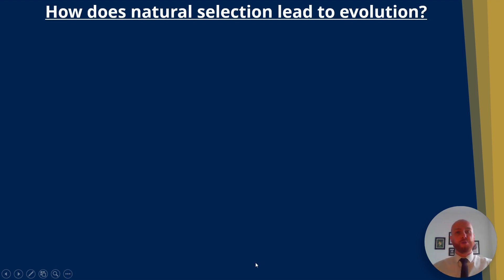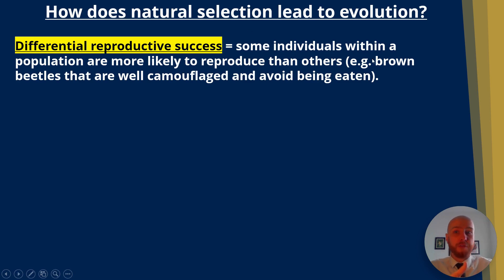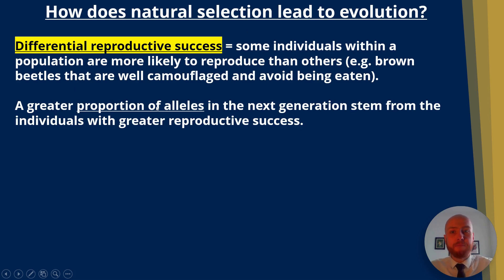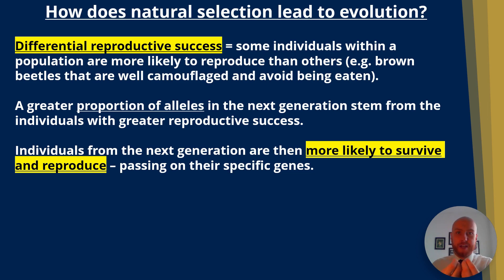So how does natural selection, discovered by Charles Darwin, lead to evolution? We have differential reproductive success, meaning some organisms are more likely to survive than others — for example the well-camouflaged brown beetles. A greater proportion of alleles in the next generation will then stem from the individuals with the greatest reproductive success, and individuals from the next generation are more likely to survive because they carry those advantageous alleles.